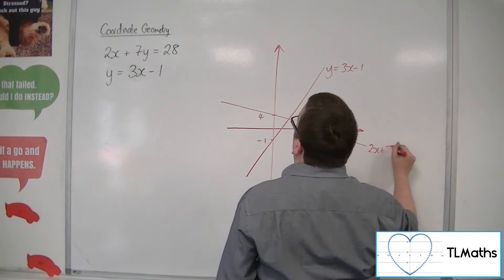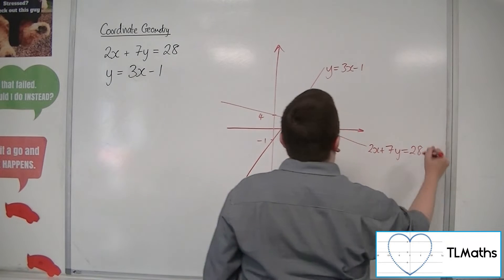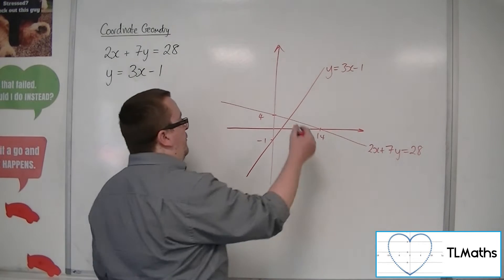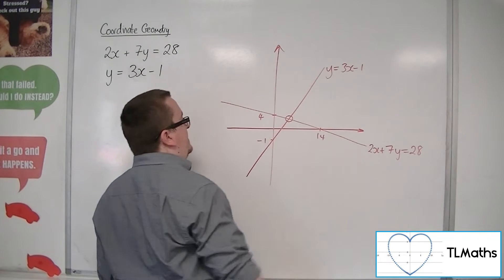2x plus 7y equals 28. So there's my two lines. It might be that I want to find where do they intersect?